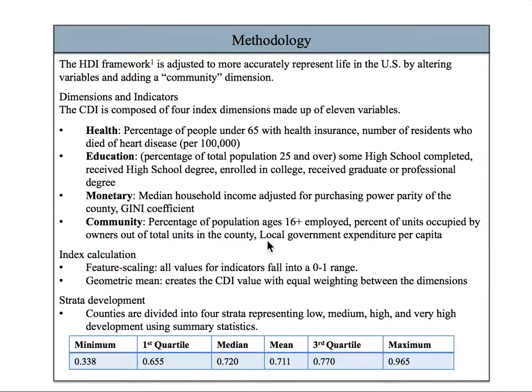The CDI consists of four dimensions composed of 11 indicators. The dimensions of the CDI reflect the intentions of the HDI but also reflect the context of the United States. The health dimension is comprised of the percentage of people with health insurance and the rate of those who die from heart disease compared to the nation's highest mortality rate.